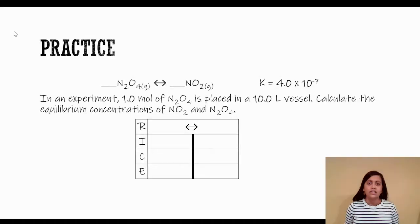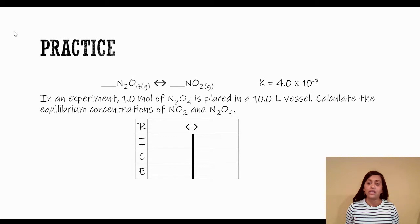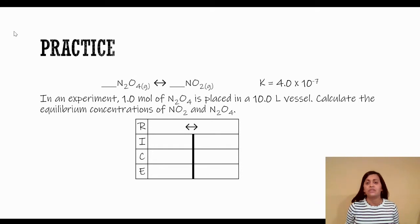So this is the first example. We have N₂O₄ in equilibrium with NO₂. We are also given the K value. Note this K value is pretty small, so a lot of times we can say that this is going to favor the reactants — the change is essentially going to be negligible.